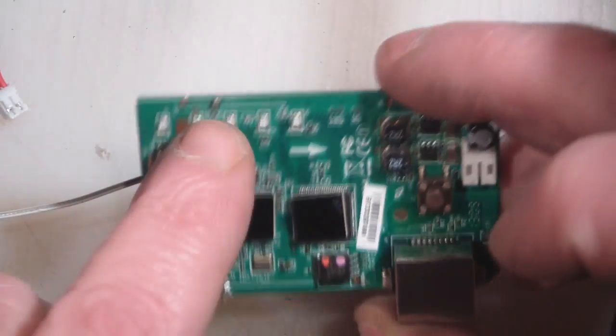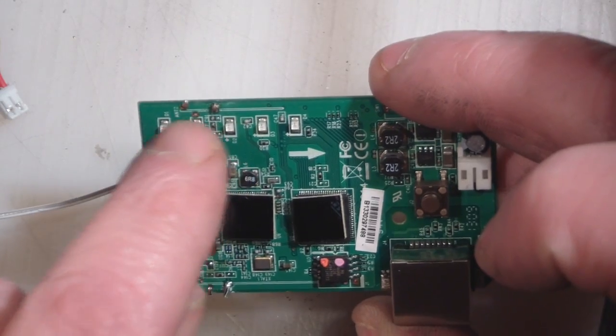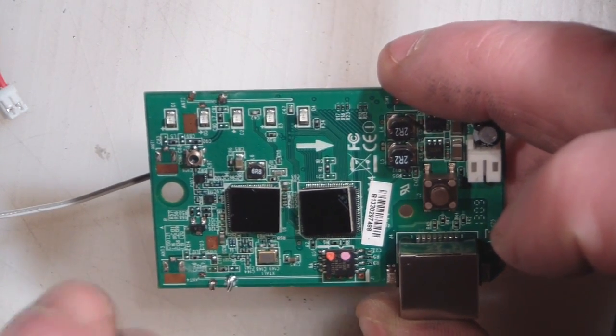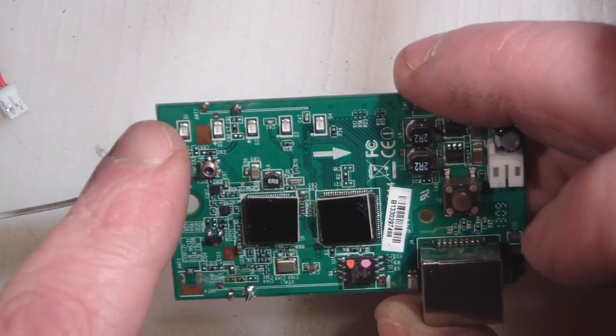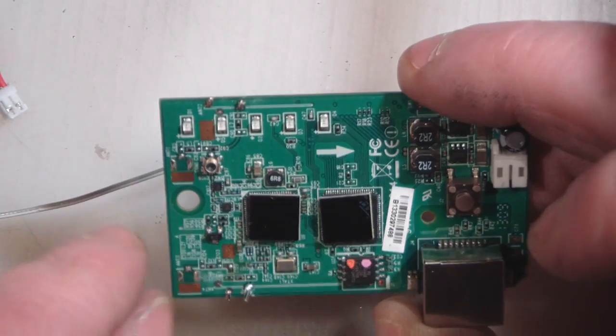Then solder the second one on the top here where the original antenna was soldered. So it should remove some of that strain relief from having two coax cables soldered onto one solder point.